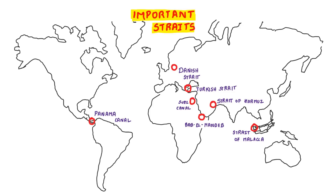First, we will talk about important straits. We will talk about the left side and right side of the map. The first one is North and South America. On the left side of the map is Panama Canal. The answer is Panama Canal.